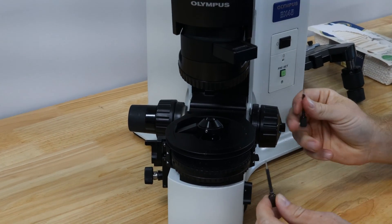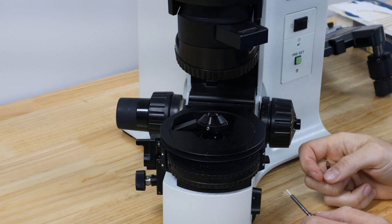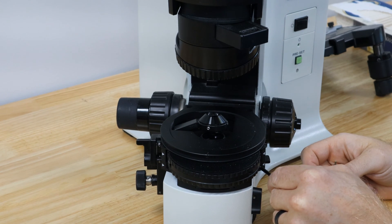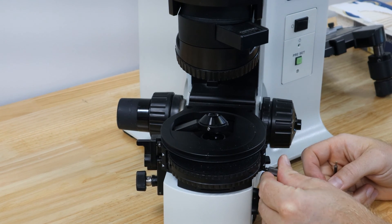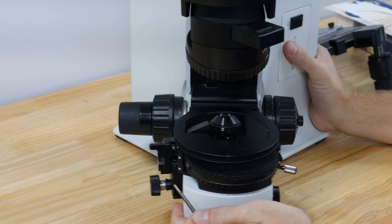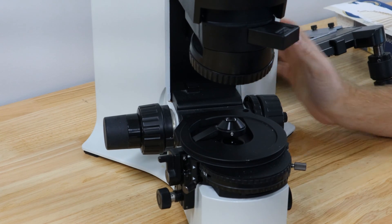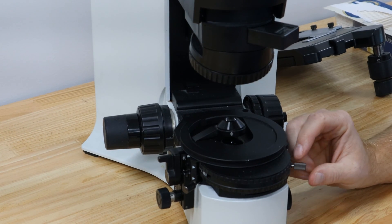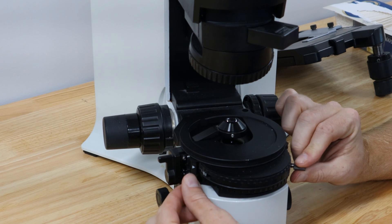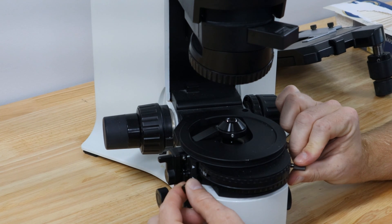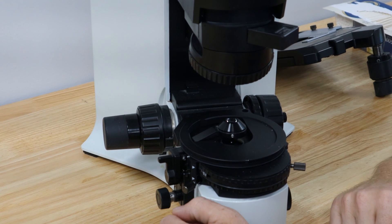Alright so these centering pins that you just took out of the scope are going to go in each one of each side of the microscope. They're going to go on the right one in the left and then you're going to be able to adjust the condenser with these two knobs just like you would on any other microscope to set Kohler illumination.